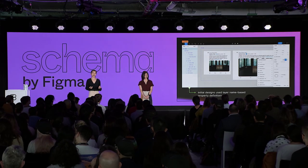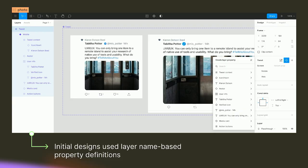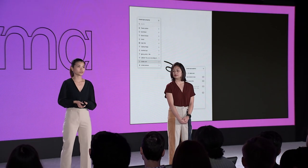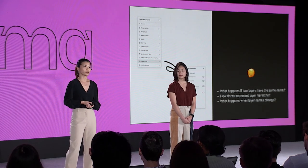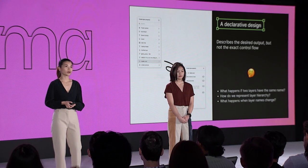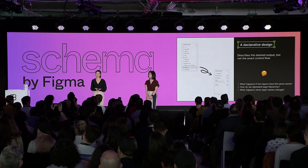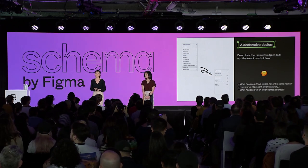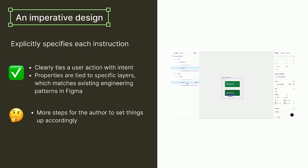One example of a product trade-off: in the first iteration of component props, we wanted to attach props to layer names. You could click a prop icon to open a picker listing all names inside your component and then attach a prop to a name. But this model quickly introduced issues — for example, what happens if two layers have the same name, or if you rename a layer so it matches another? These issues arise from declarative design principles where the user describes the desired output but doesn't tell us the exact control flow, making it hard to keep the data model in sync.